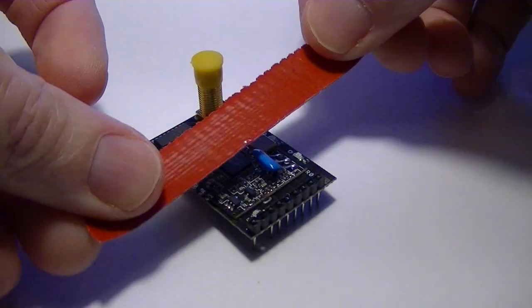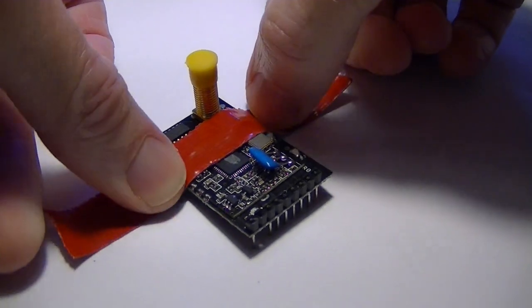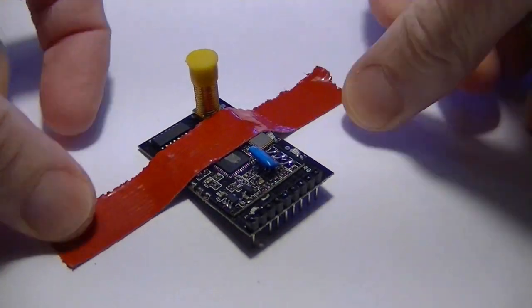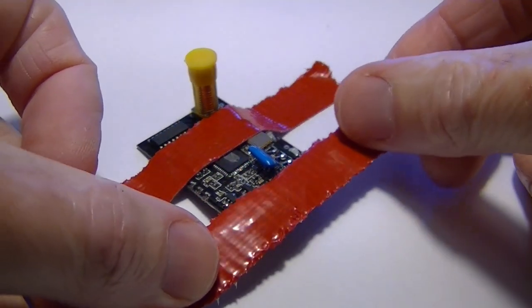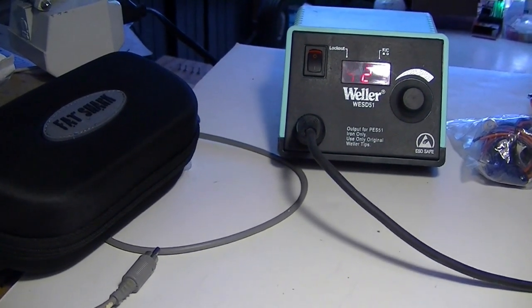Next I'm going to fasten the board down to the desktop with some duct tape just to hold it there. I'm warming the soldering iron up to about 600 degrees.